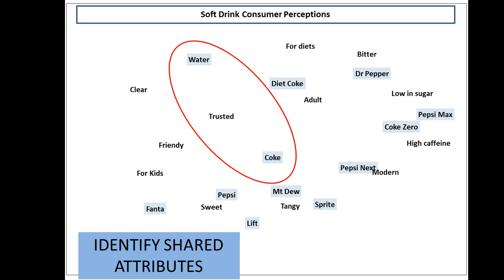The next thing we can look at is how strongly we are associated with particular attributes. In this data set, Trusted is very highly associated with Coke, but also very highly associated with Water. However, when you look at the other attributes, they are quite different. So on the map, Water and Coke are positioned away from each other because they are not overly similar products, but they both share the attribute of trust — that is why it sits in the middle.